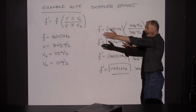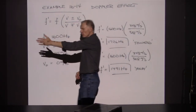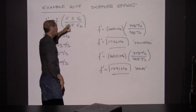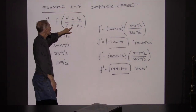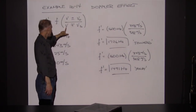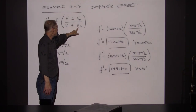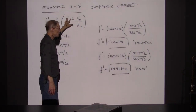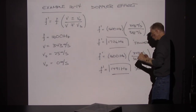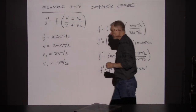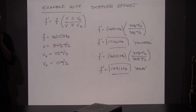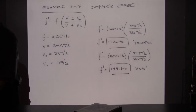When the police car passes and is moving away, I want a lower frequency, so I use the plus sign in the denominator: 343 plus 25. That results in a lowered Doppler shift — now I'm hearing a pitch of 1491 hertz. So the Doppler effect as the police car goes by shifts from 1726 down to 1491.